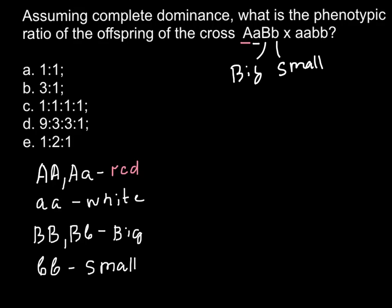Now let's solve the second part of our problem. We have one parent that is heterozygous for both alleles — that is capital A, small a, and capital B, small b. What kind of gametes can such a parent produce? This parent is diploid, and all the gametes must be haploid — half the number. So we have two allelic pairs here.